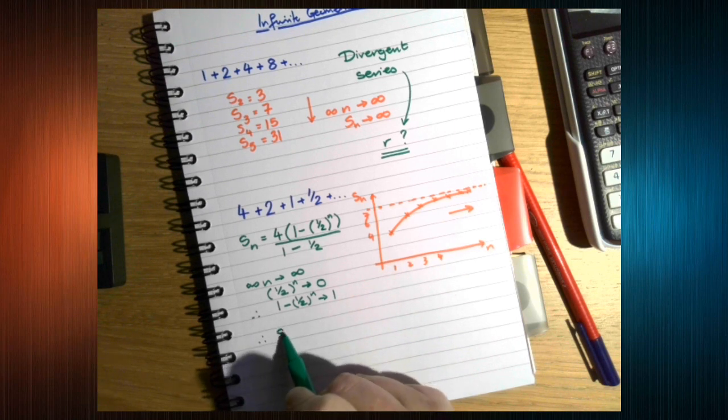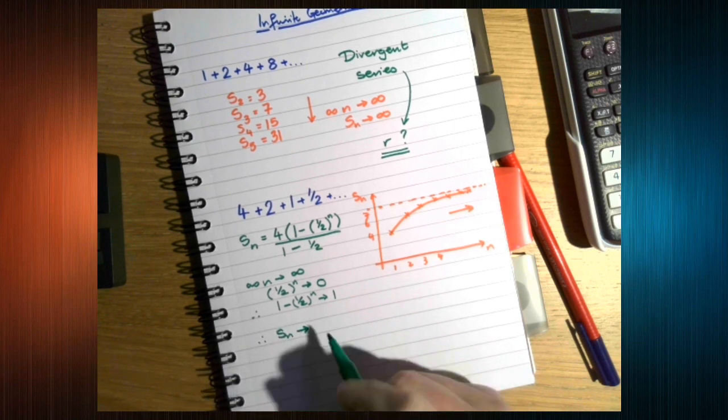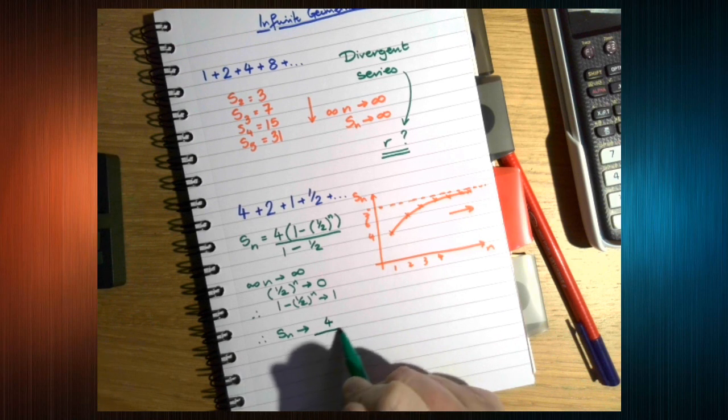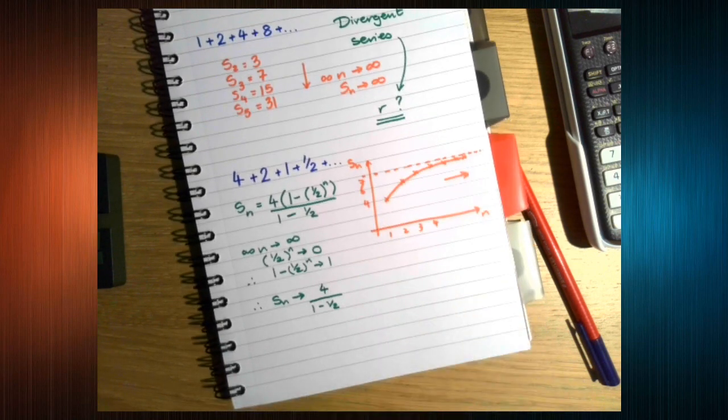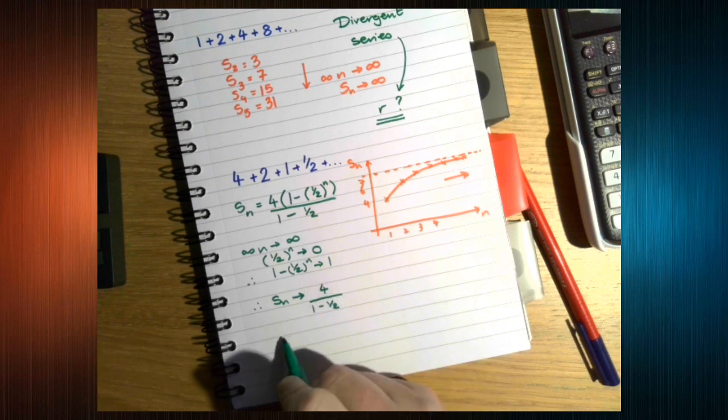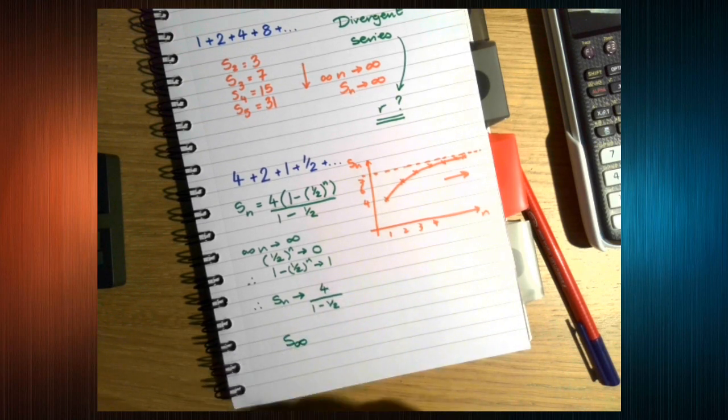So, the sum gets closer to 4 over 1 minus 1 half. This value that we calculate, we call the sum to infinity.